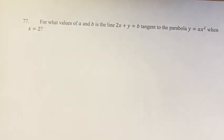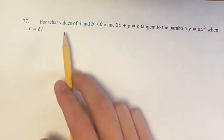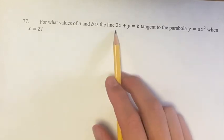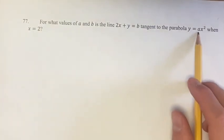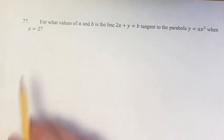Hello and welcome back to another video. In this problem we're asked for what values of a and b is the line 2x plus y equal to b tangent to the parabola y equals ax squared when x equals 2.